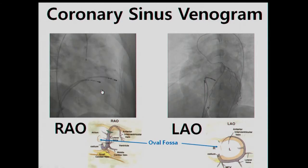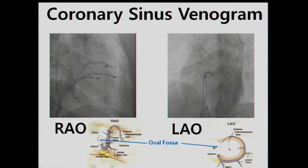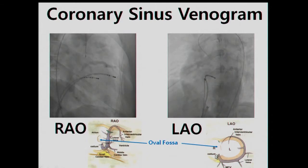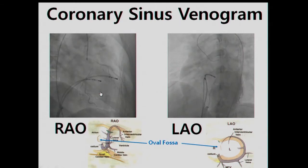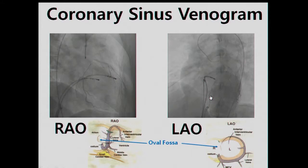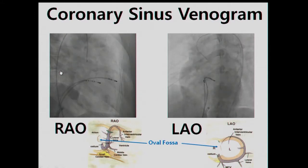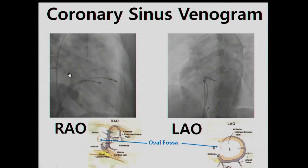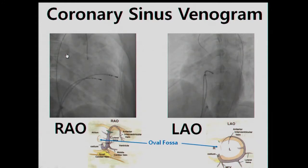These are angiographies on RAO view and LAO view. The left panel shows the coronary sinus venogram on RAO view, and the right panel shows the coronary sinus venogram on LAO view. You can appreciate the obvious coronary sinus on RAO view and LAO view. Also, you can see the posterior cardiac border in front of the thoracic vertebrae. Therefore, you can estimate the location of the fossa ovalis between the coronary sinus and the posterior cardiac border.